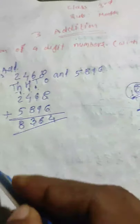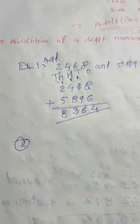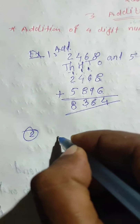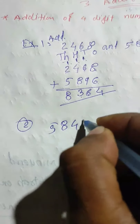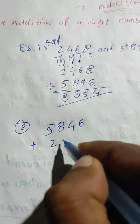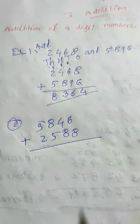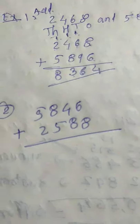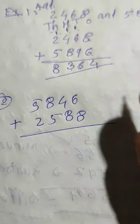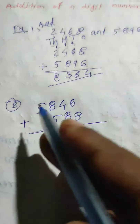Next we see the second example. Four plus two thousand five hundred eighty eight - one example we have written. Again first add the ones. You can write and solve the same way.